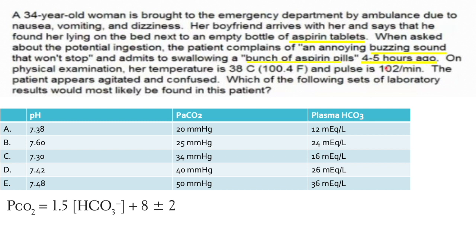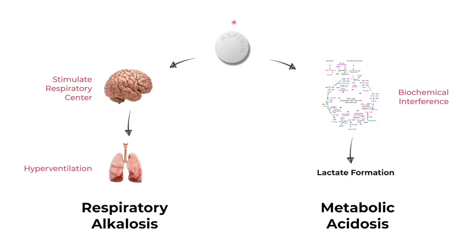She admits to swallowing a bunch of aspirin pills four to five hours ago - note this time, because it's past two hours. On physical exam her temperature is elevated - aspirin causes hyperthermia because it uncouples oxidative phosphorylation, so instead of making ATP the cells release it as heat. Her pulse is 102. The patient appears agitated and confused. Aspirin causes a mixed acid-base disorder: early on, at one to two hours, it stimulates the respiratory center leading to hyperventilation, which washes out CO2 and causes respiratory alkalosis.